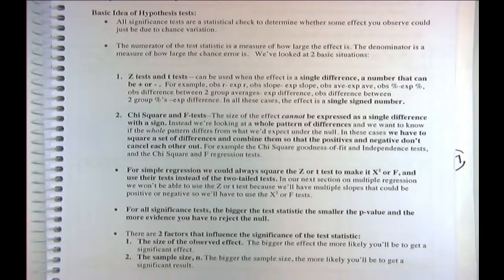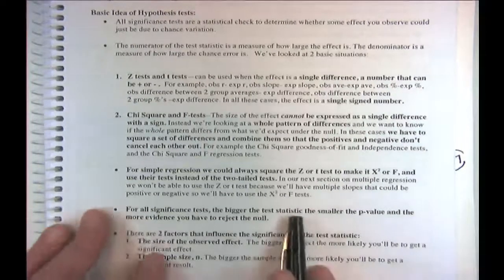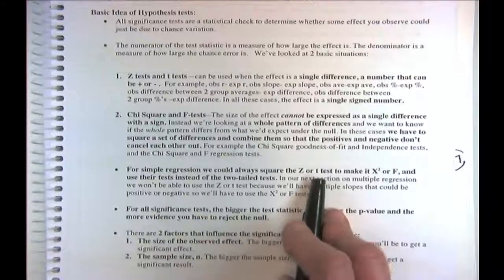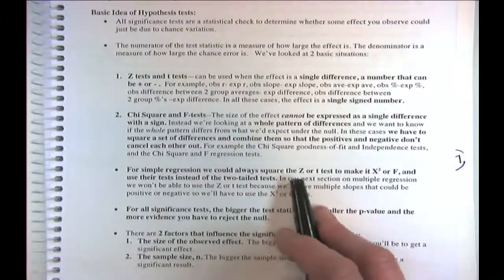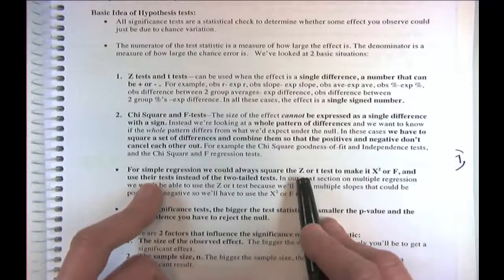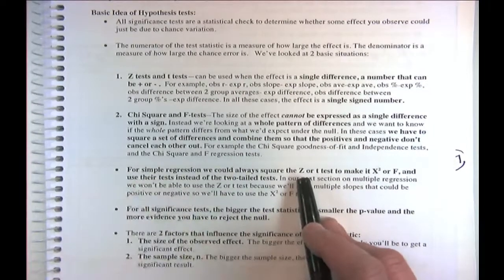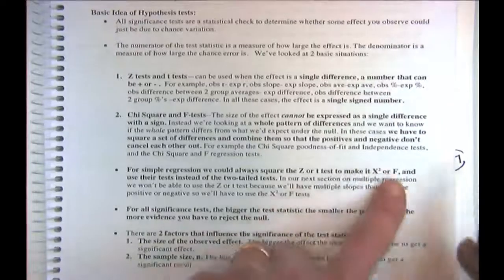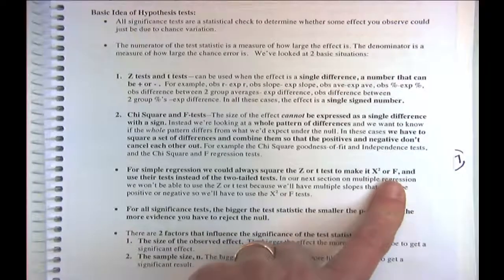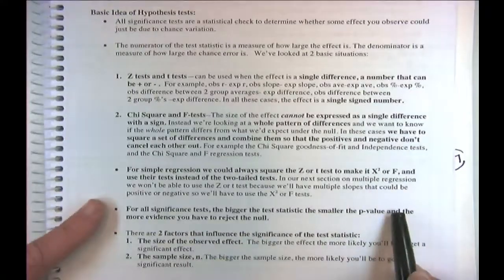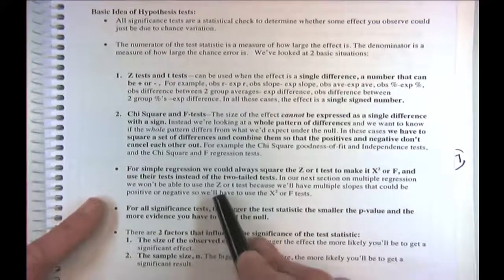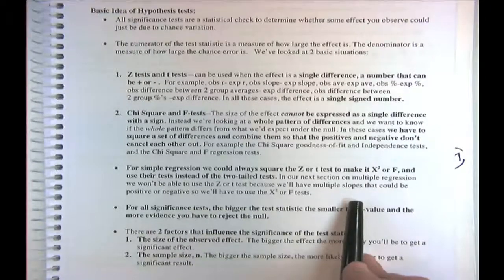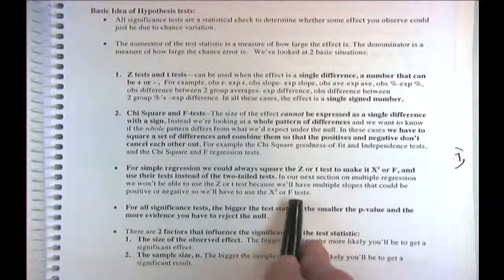We're doing the same type of thing here using a chi-square or F-test. With an F-test we get the ratio of two variances. For simple regression, we can use the z and t test since there's just one slope — it boils down to a single signed difference. But if you square the z you get a chi-squared distribution, and if you square the t you get the F-distribution with one degree of freedom in the numerator. In multiple regression, we won't be able to use z's and t's because we're assessing multiple slopes.